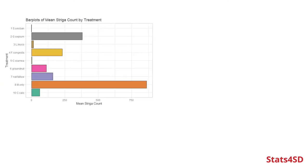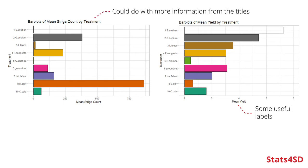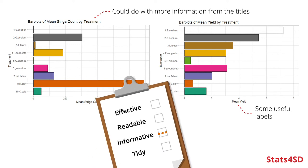So instead of the table, let's go back and try to be a bit more careful with how we put things together. I've made a few bar charts here — striga count on the left and yield on the right. There are a few labels to help us, some information on the plots, and sensible axis labels. We could do with a bit more information in the title and context about what the treatments actually are, but we're on the way to something informative. We've got something reasonably tidy, and I can read off different mean values and see which treatments have higher striga count and which have higher yield. However, showing this as a bar chart is a little bit of a controversial choice.